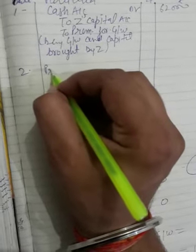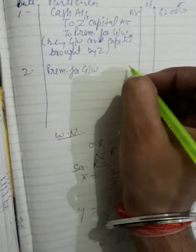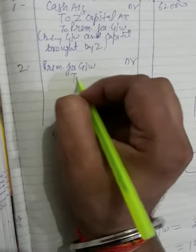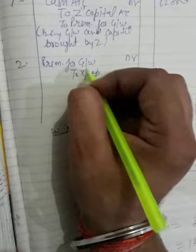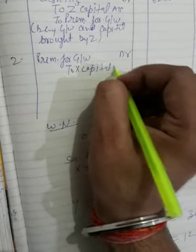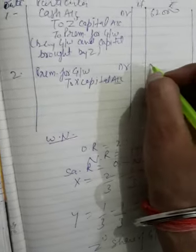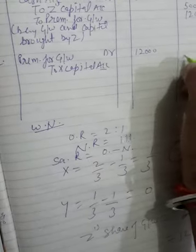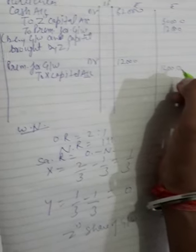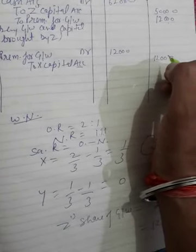Now, the second entry for the treatment of goodwill: Premium for Goodwill Account debit to X's capital. I am writing only X's capital because only X is sacrificing, that is why ₹12,000 and ₹12,000.